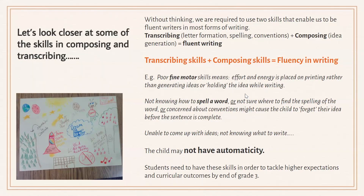Children who get hung up on spelling, or forget how to spell certain words, or how to form letters within a word, can become frustrated and put all their energy into that rather than holding onto the idea they had before their sentence is even complete. We want our children to be automatic and become fluent, especially from kindergarten to grade three, because the curriculum has higher expectations and higher-order skills that need to be tackled.